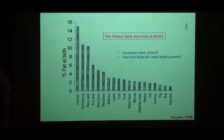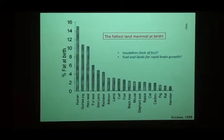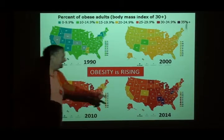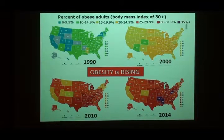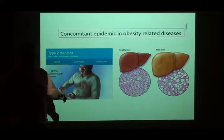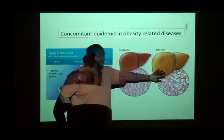One can think about why that's true — perhaps babies are born without fur and need insulation? But mice are born without fur and aren't fat. Much of the thought has to do with needing fuel and lipids for rapid brain growth. Whatever the reason, we're fat and we're getting fatter. In the United States, the level of obesity is going way up. With this epidemic of obesity comes concomitant diseases: type 2 diabetes is an enormous epidemic, and obese people get fatty liver disease — big fat globules called steatosis destroying the liver.